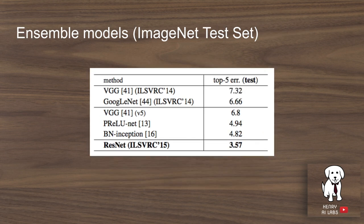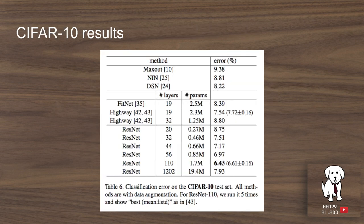This shows the results of the ensemble of ResNets, achieving state-of-the-art on the top-five predictions on the ImageNet test set. On the CIFAR-10 dataset, they find that going from 110 layers achieves state-of-the-art, but when they try to go to 1202 layers, the error goes back up — so they haven't quite figured out how to make it go that deep yet.